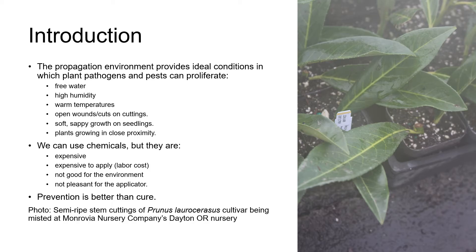There are plenty of pesticides we can use to treat pests, pathogens, algae, mosses, liverworts and weeds, but chemicals are expensive. We have to pay somebody to apply them. They're not good for the environment and they're not that pleasant for the applicator either. So doing our best to prevent pests and diseases from entering the propagation environment in the first place is a more sustainable and more cost effective strategy.